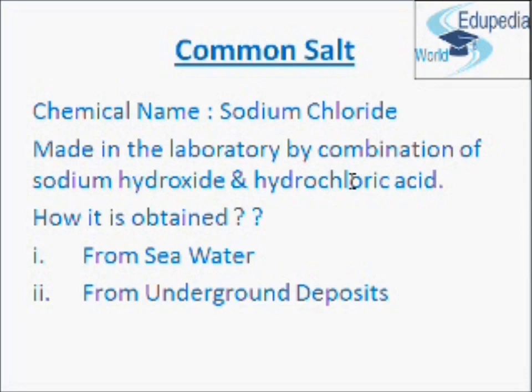The second source is common salt from underground deposits. Underground deposits of common salt are found in many parts of the world. The large crystals of common salt found in underground deposits are called rock salt. Rock salt is usually brown due to the presence of impurities in it. Rock salt is mined from underground deposits just like coal. The rock salt we dig out today from the earth was formed when ancient seas dried up by evaporation thousands of years ago.